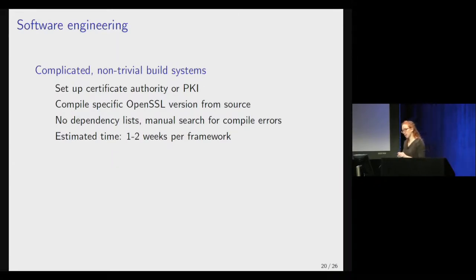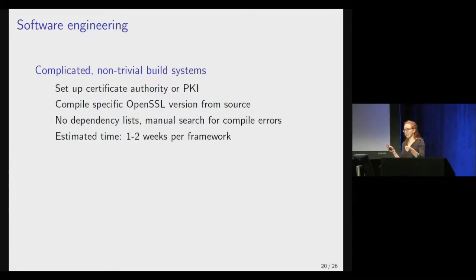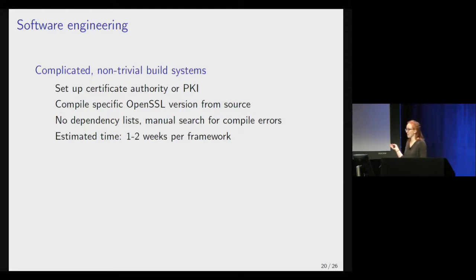Now I want to talk about some of the limitations we saw in these tools. These are major software engineering projects, and for the most part they are subject to the constraints of the academic setting, and they were very hard to use. One example is incredibly complicated build systems. We had to do a ton of work just to get them running — in some cases you have to set up your own custom certificate authority or public key infrastructure for encrypted channels between parties, compile specific OpenSSL versions from source, and most don't have dependency lists so you compile until it breaks, figure out what package you need, then start again. Overall, we estimate it took about one to two weeks per framework just to compile them and run the existing examples.